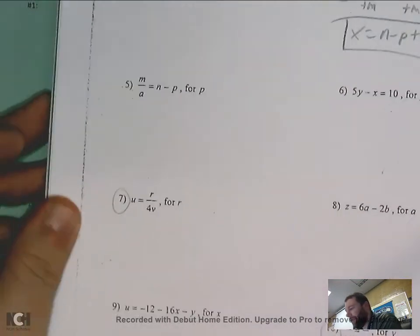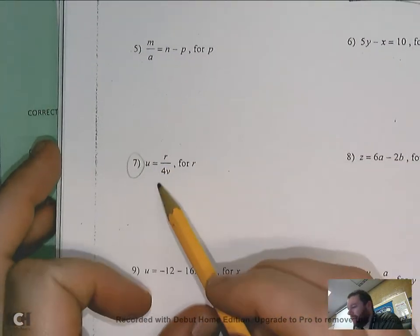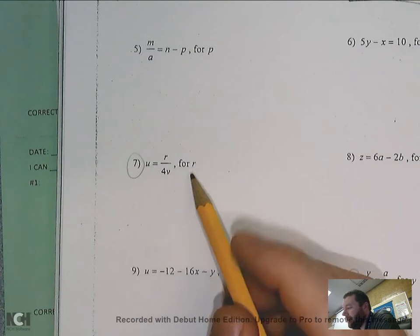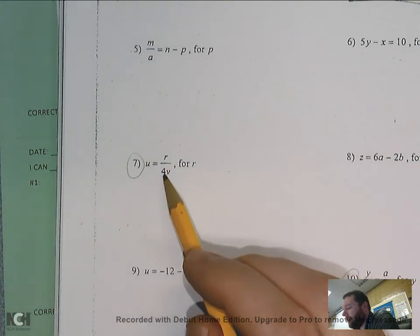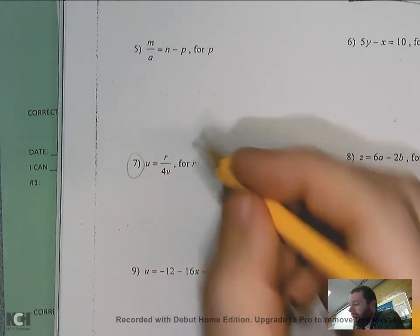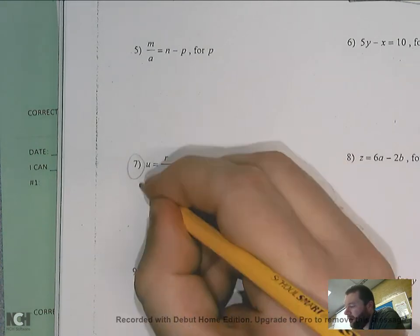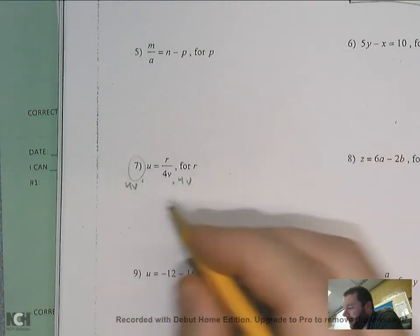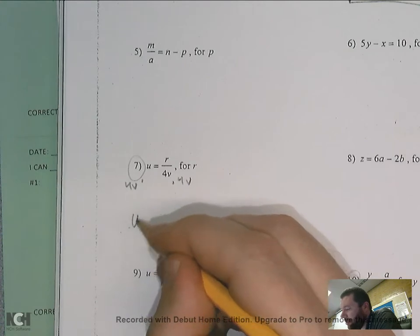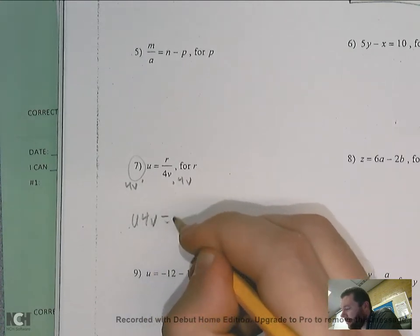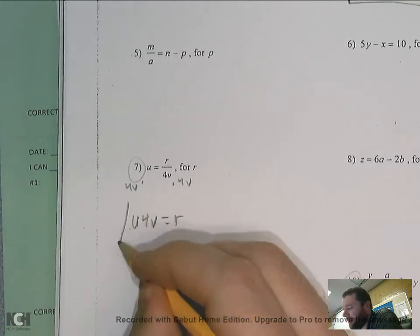Next one, number seven wants me to solve for r. So it's r over 4b. So I've got to get rid of that 4b. So I'd multiply each side by 4b. And that gives me u times 4b equals r. R is by itself. I'm done.